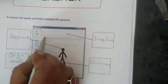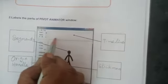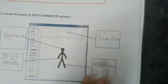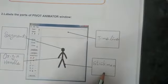This line, here you can see a rectangular box. This box is known as timeline box. And this figure is known as stick man.